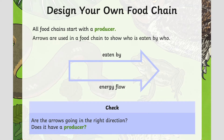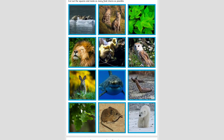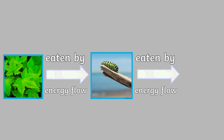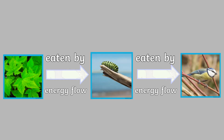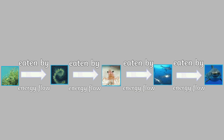The best way for children to understand food chains is for them to make their own, and in the pack we have pictures that you can use. Cut them out and arrange them using arrows, which in food chains means 'is eaten by' and shows the flow of energy. Don't stick them down though — try to make as many food chains as you can using the different animals we have included.